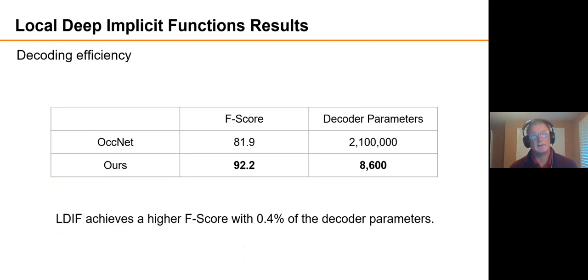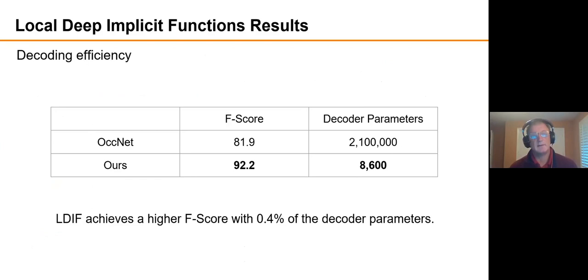And then finally the same argument as in local implicit grids. The size of the network that it needs to use is much smaller than one that would be a global network for all possible shapes. So again, the shape space it has to encode is much smaller. And so we can use a much smaller network. And in this case, compared to OccNet it's using 0.4% of the decoder parameters for its decoder. So that's a good thing.